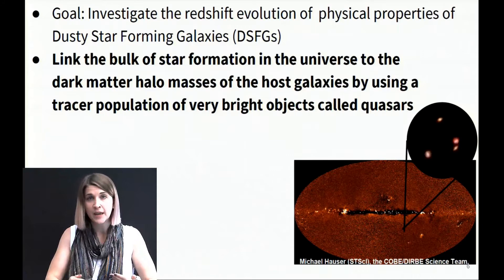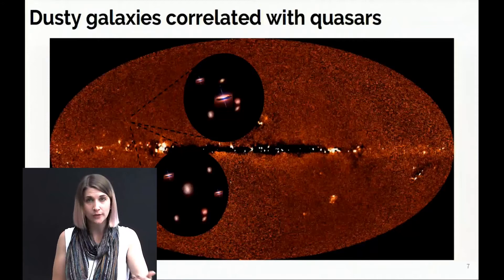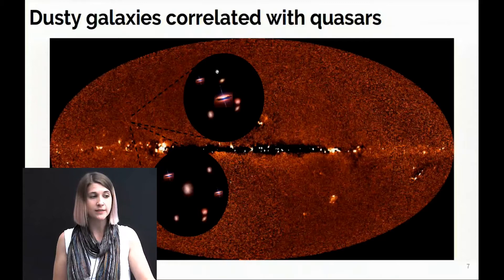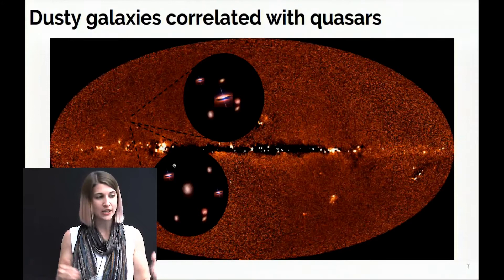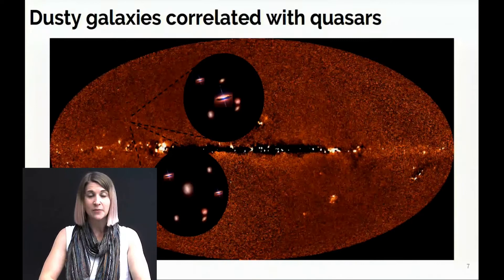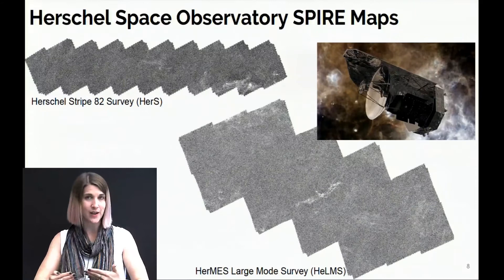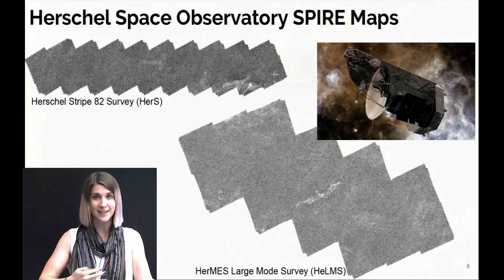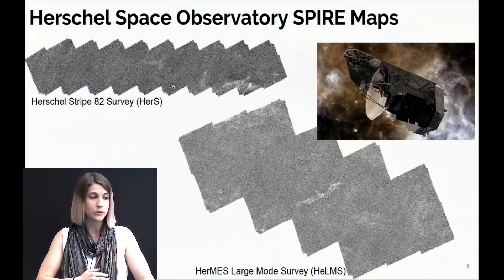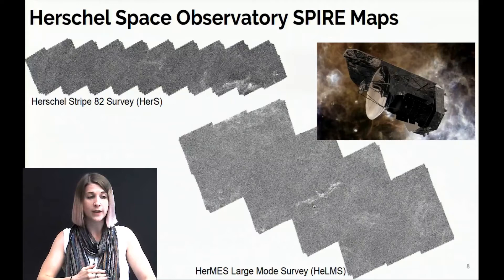We are interested in the dusty star-forming galaxies that are correlated with the quasars. The theoretical picture is quasars that live in dark matter halos along with dusty galaxies in neighboring dark matter halos that also potentially have dusty galaxies and/or quasars inside of them. The infrared data we're using is from the Herschel Space Telescope using the instrument called SPIRE. This survey overlaps well with the Sloan Digital Sky Survey, maximizing the number of quasars for probing the dusty galaxies. I'm showing the Herschel Stripe 82, which overlaps with the SDSS Stripe 82, as well as the Hermes Large Mode Survey field, which is a much larger area that also overlaps with the Sloan Digital Sky Survey.